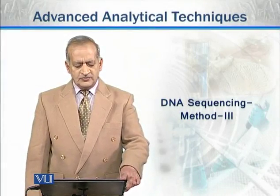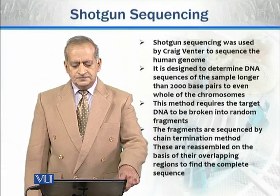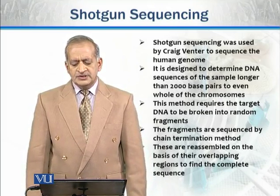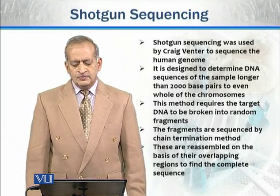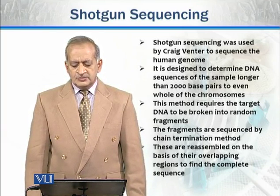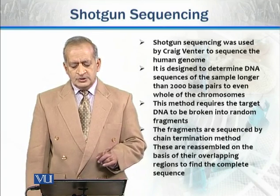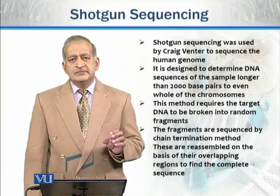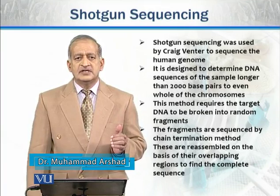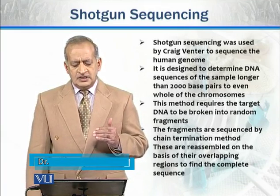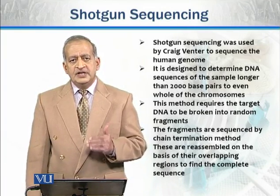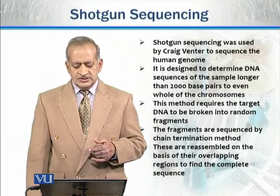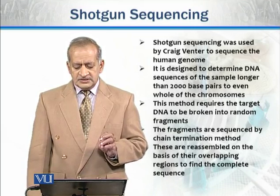The third type of method is shotgun sequencing, used by Craig Venter in sequencing the human genome. It is designed to determine DNA sequences of samples which are longer than 200 base pairs, up to even a complete whole chromosome. Unlike basic methods that sequence short DNA fragments, shotgun sequencing handles larger fragments of 200 base pairs or even whole chromosomes.